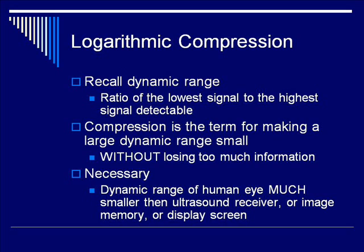The next thing is slightly more complicated. It's called logarithmic compression. The one thing you need to remember is not to be intimidated by the math in the name. Logarithmic compression requires a little discussion of dynamic range. Dynamic range is the ratio of the lowest signal we have to the highest signal we have. Compression is just a term for making this large dynamic range small, and we'd like to do it without losing too much information. This is really important because even if our display could show the entire dynamic range of the transducer, the human eye has a much smaller dynamic range than the ultrasound receiver, the image memory, or the display screen. So we need to compress down that signal just so that we can see all the information we have.